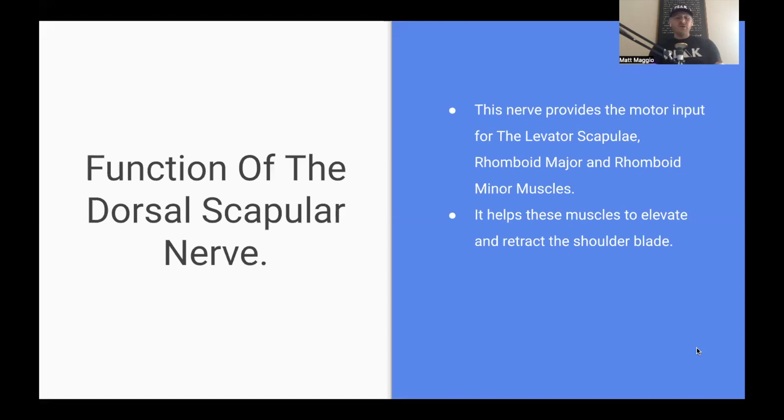So the function of the dorsal scapular nerve: this nerve provides the motor input for three muscles - the levator scapulae, the rhomboid major, and rhomboid minor muscles. Its job is really to help these muscles elevate and then retract, so basically lift up and pull back the shoulder blade. That's what it does. It is a motor nerve.